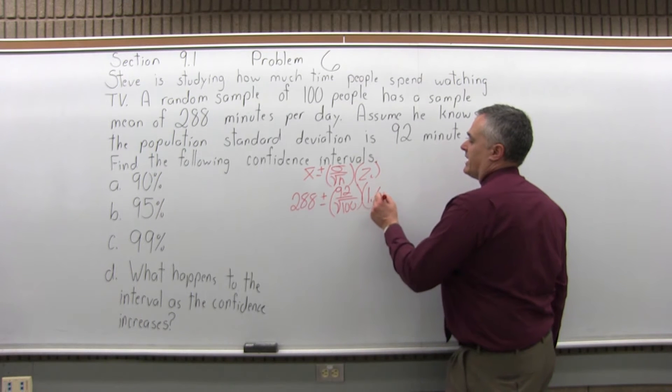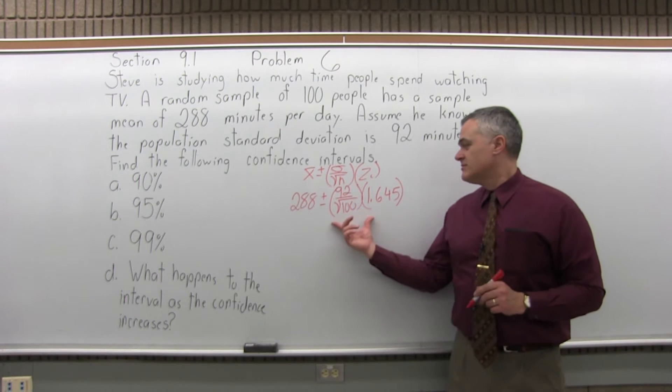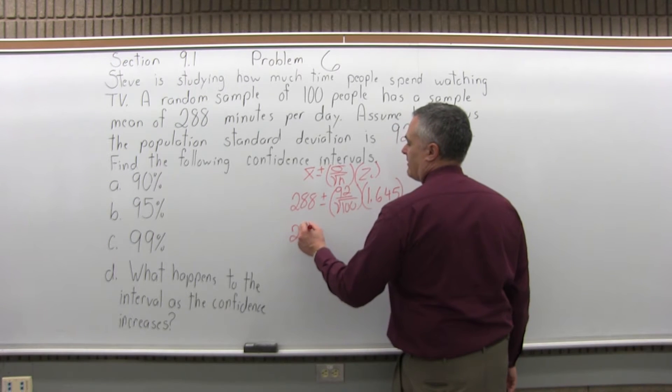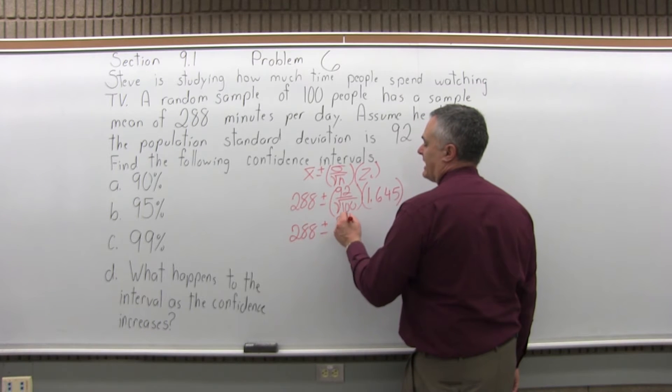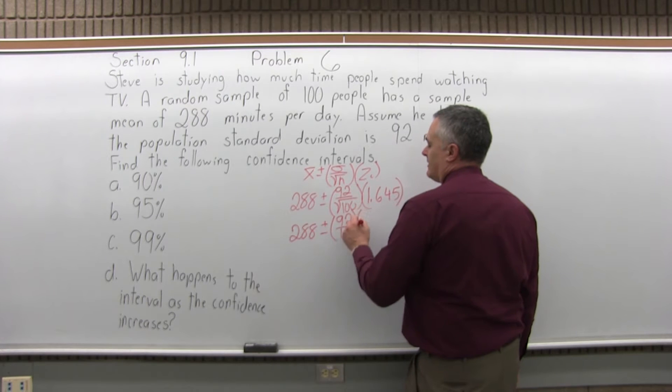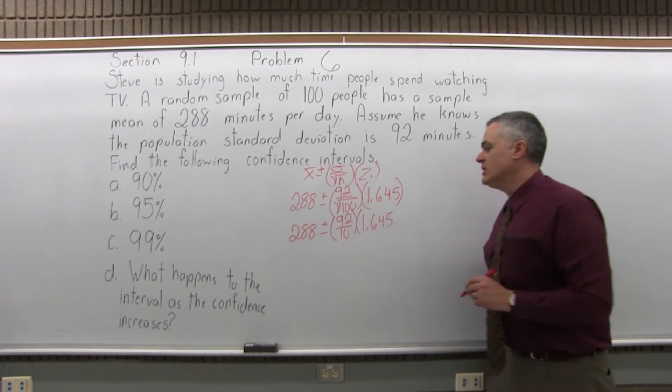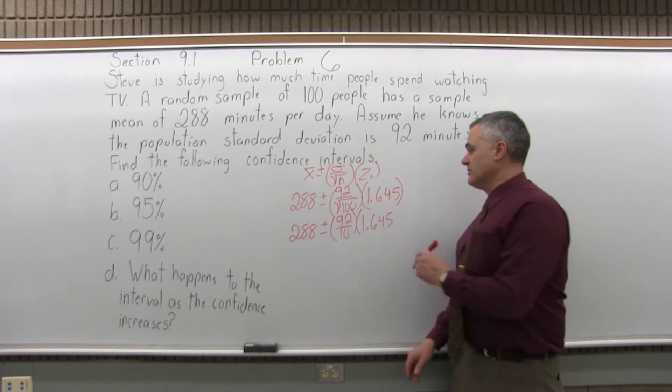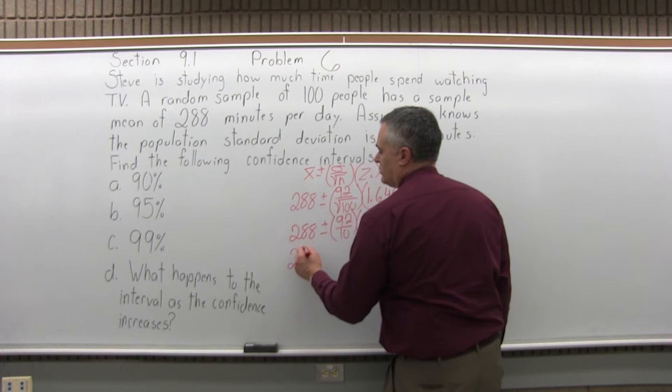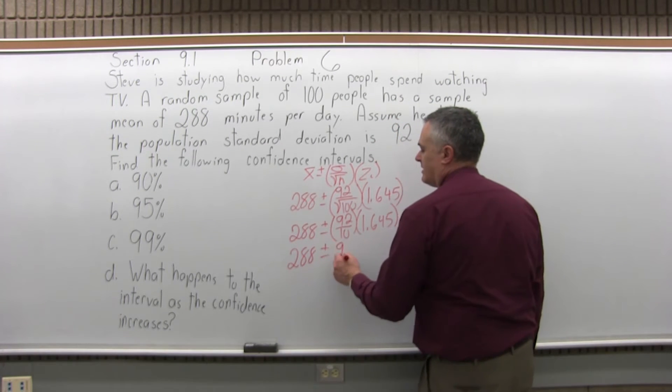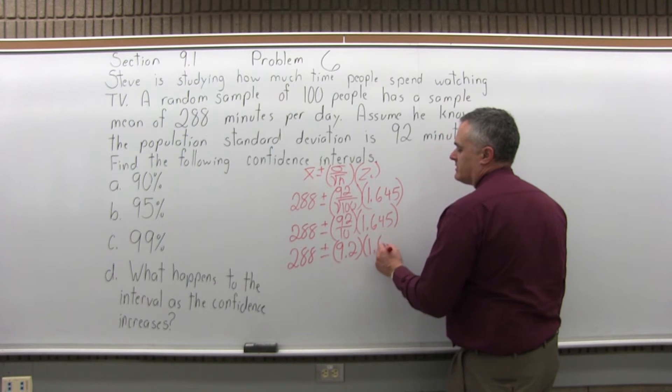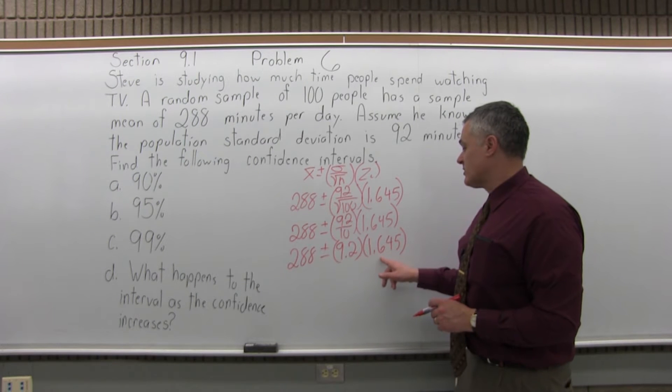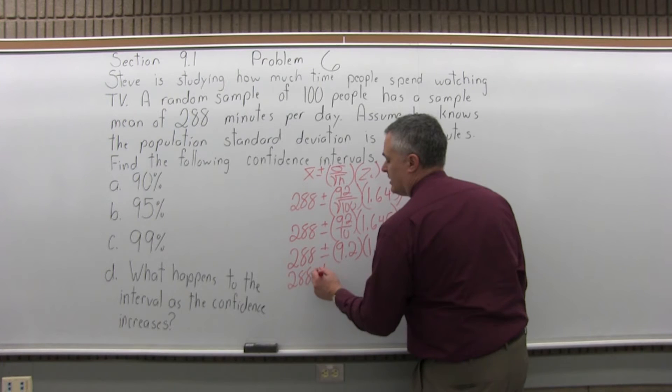The formula fills in just like that. First, deal with the square root: 100 has a square root of 10. So we have 288 plus or minus 92 over 10 times 1.645. Next, divide 92 by 10, which equals 9.2. So we have 288 plus or minus 9.2 times 1.645.